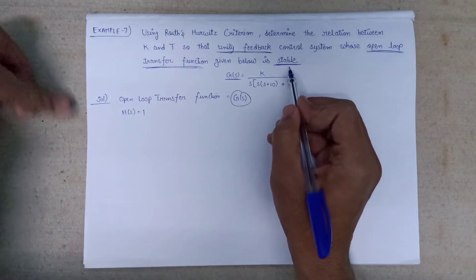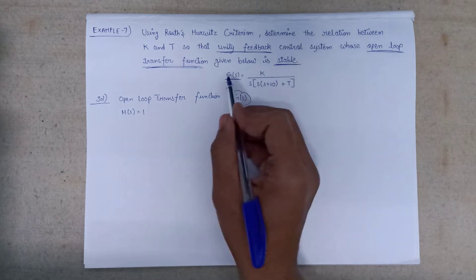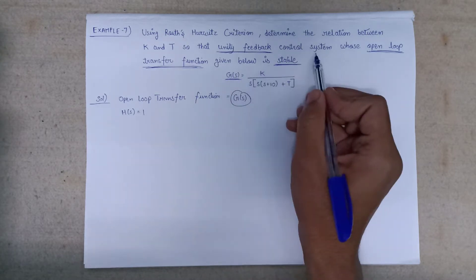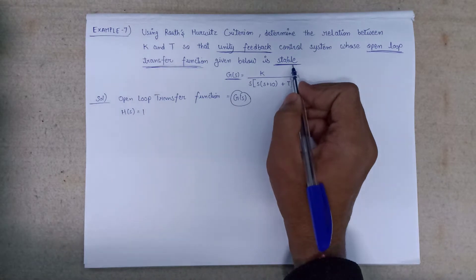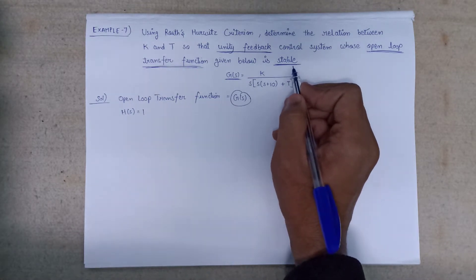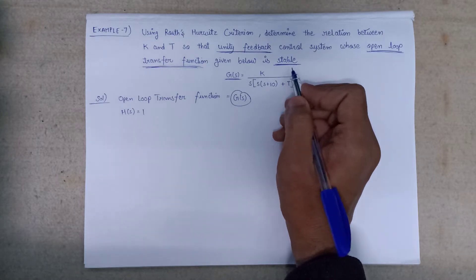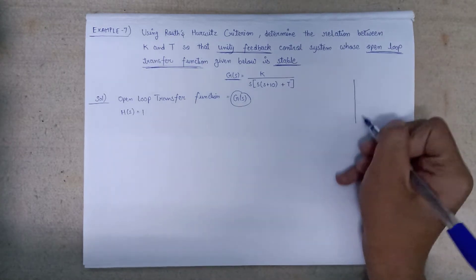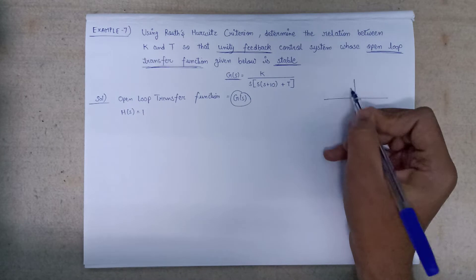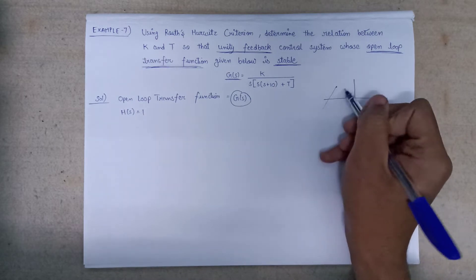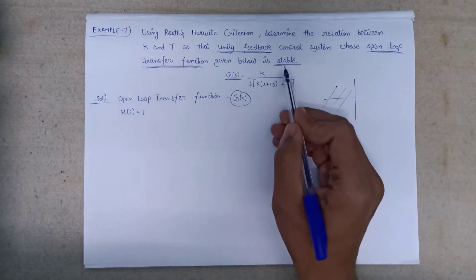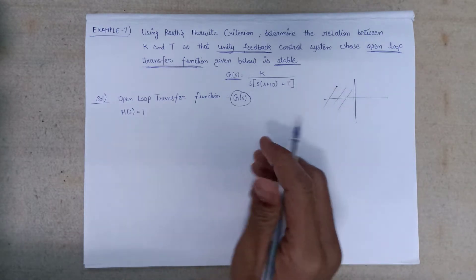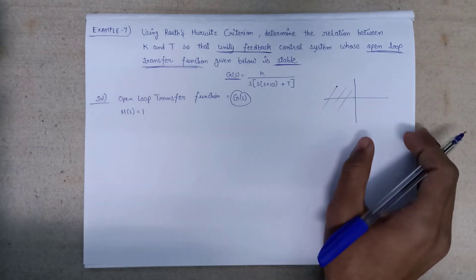It is also saying that the open loop transfer function given makes the control system stable. By the condition of stability, all the roots lie in the left-hand side of the s-plane. All the roots lie in this area of the s-plane — that's why the system is stable.